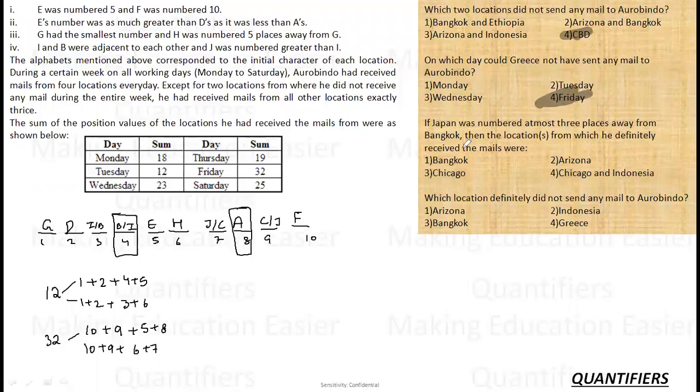If Japan was numbered at most three places away from Bangkok. Bangkok is at most three places away from Japan. If Japan is here, one place away, two place away, three place away is not possible. So Japan has to be kept here. Then one place away, two place away, three. Bangkok has to be kept here. For this question, I am taking Bangkok over here and Japan over here. Then the question is, from which location he definitely did not receive the mail? So definitely did not from Bangkok and Arizona. He did not receive the mail from Bangkok and Arizona, definitely did not receive from here. From Chicago and Indonesia, he definitely received. So answer is fourth option. Because from these two places, he definitely has received.